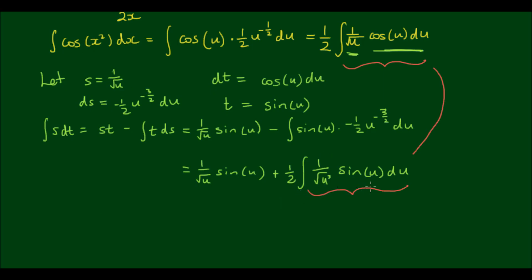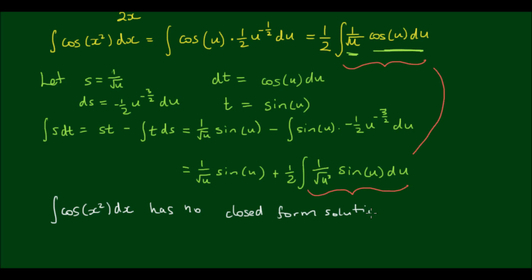This is actually quite handy to know because it means that the integral of cos(x²) cannot be expressed as a closed form solution. The integral of cos(x²) dx has no closed form solution, meaning we can't express this as a finite combination of elementary functions — a finite combination of cosines, sines, exponentials, tans, natural logs, whatever. But we can still actually integrate this, and this is where the Maclaurin series comes in handy.